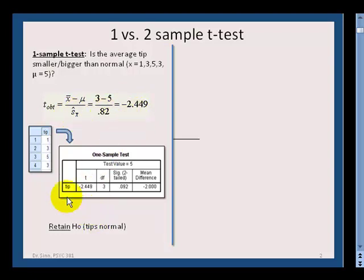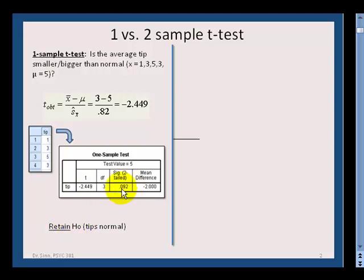In SPSS, you'd plug it into a single tip column, get your t-value, then run a significance test. In this case, since the result is not below 0.05, we'd retain the null.